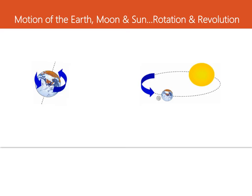The Sun and Moon appear to rise in the east and set, or go down, in the west each day. At midday, the Sun appears to be almost directly overhead. But this apparent motion of the Sun and of the Moon is actually the result of the rotation of the Earth on its axis.